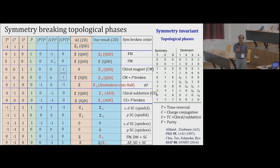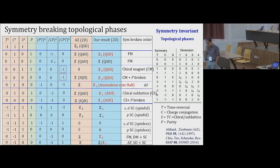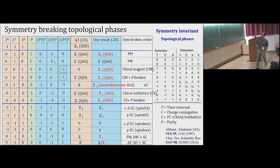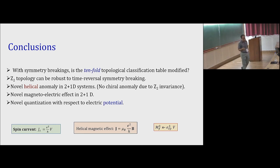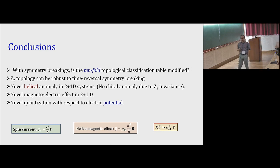Whereas you expect one sort of topological phase according to the topological table, we see that quantum spin Hall states are much more robust to time-reversal-breaking perturbations. In conclusion, symmetry breaking is not necessarily the essential criterion for determining what topological phase we have. Band inversions and bulk-boundary correspondence also play an important role. I demonstrated this through examples, but there should be some generality to explore in other topological phases. We also discussed helical anomaly and magneto-electric effects.